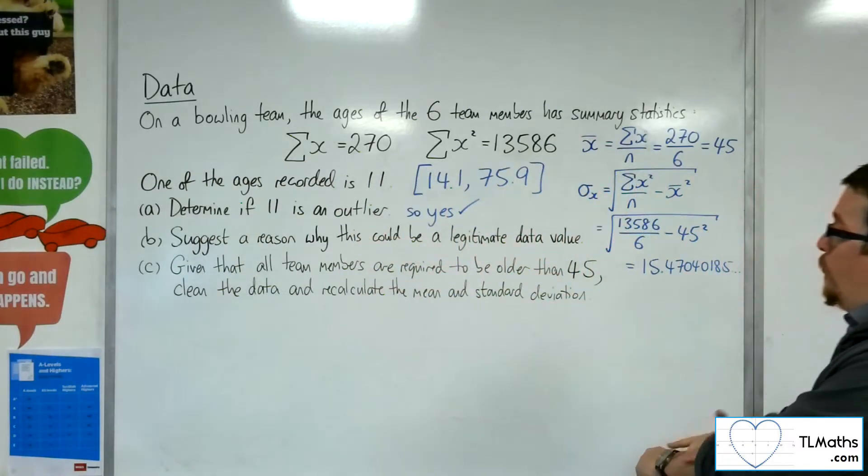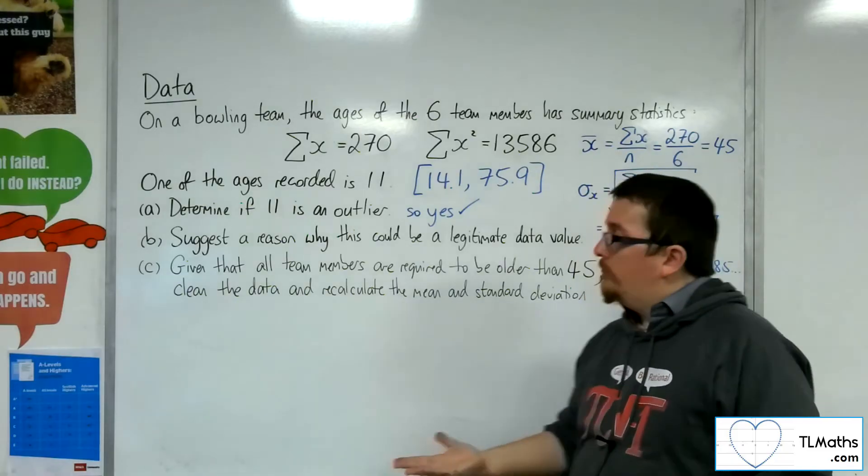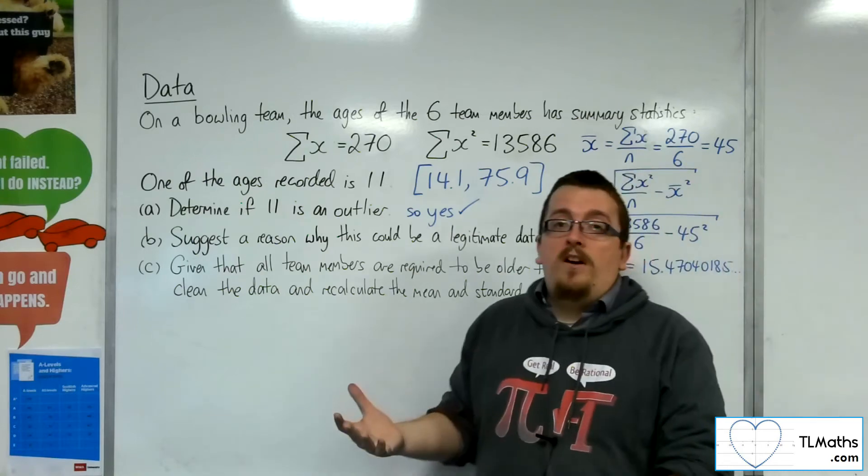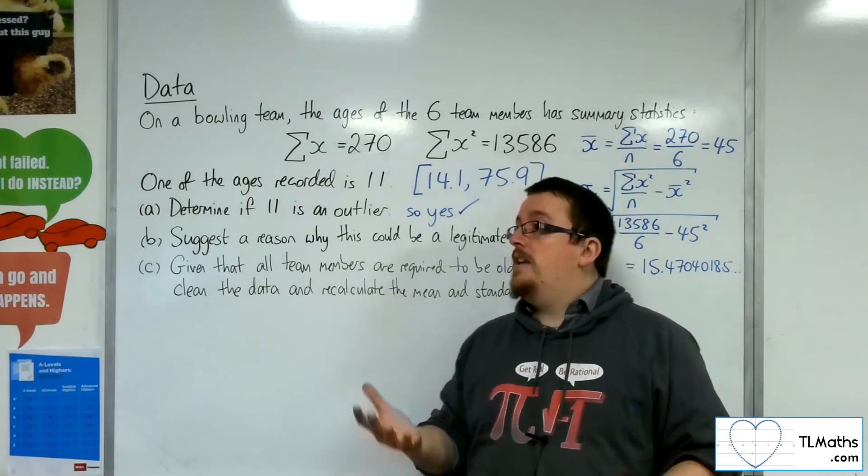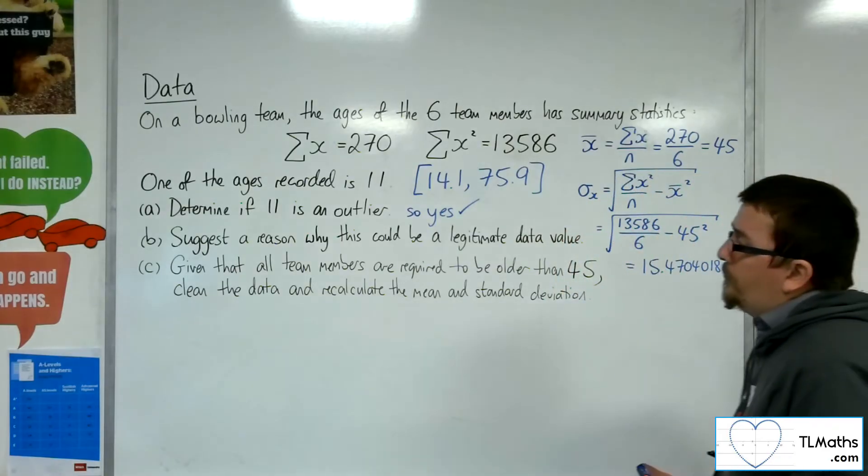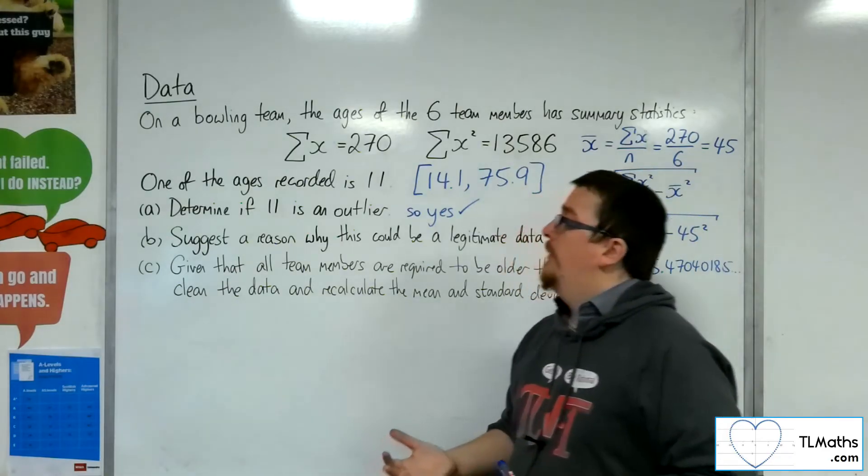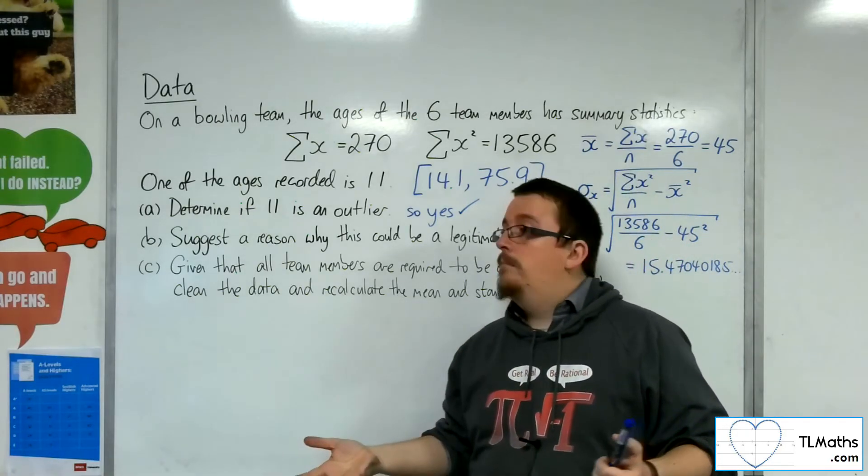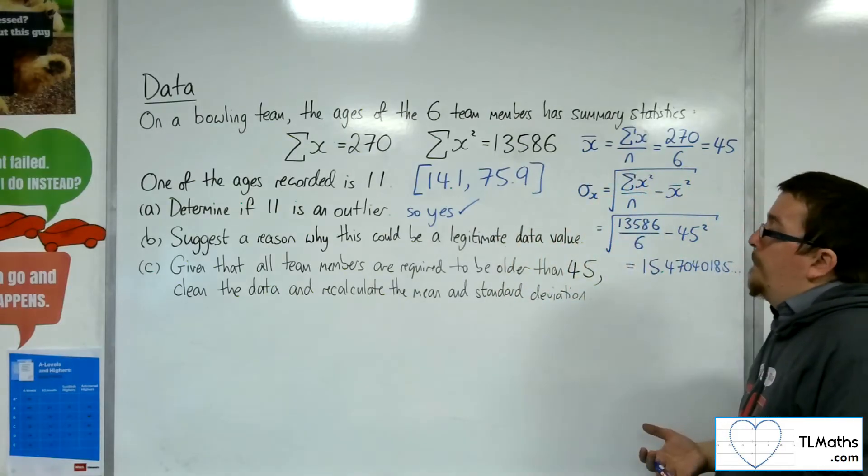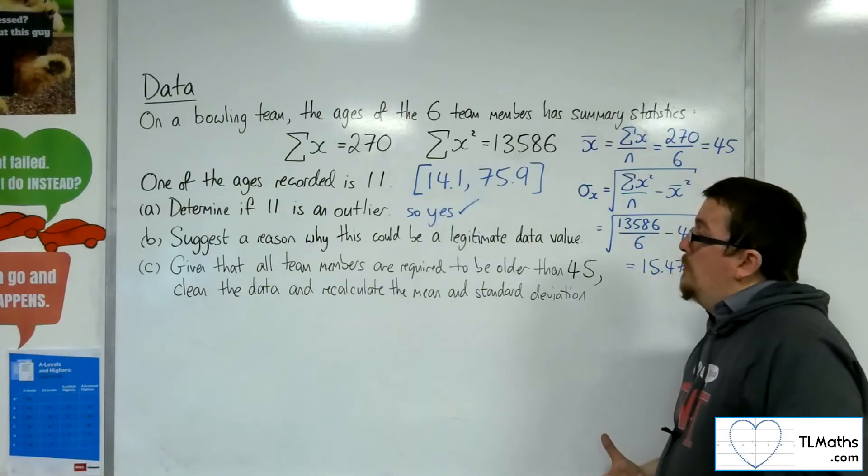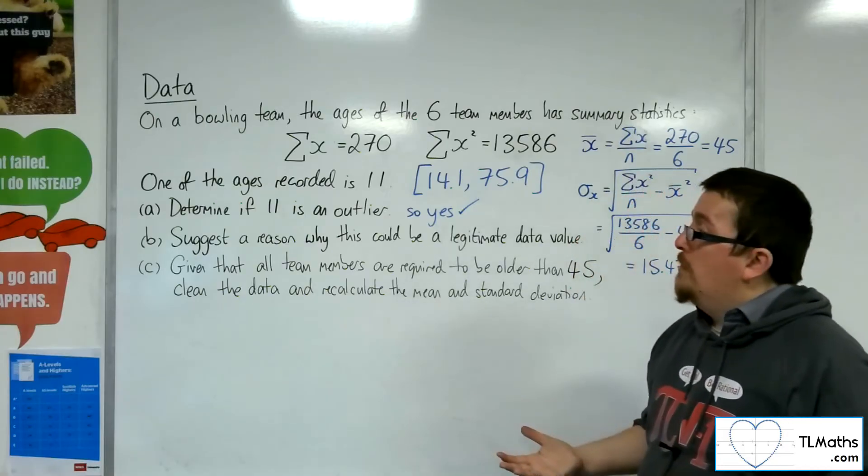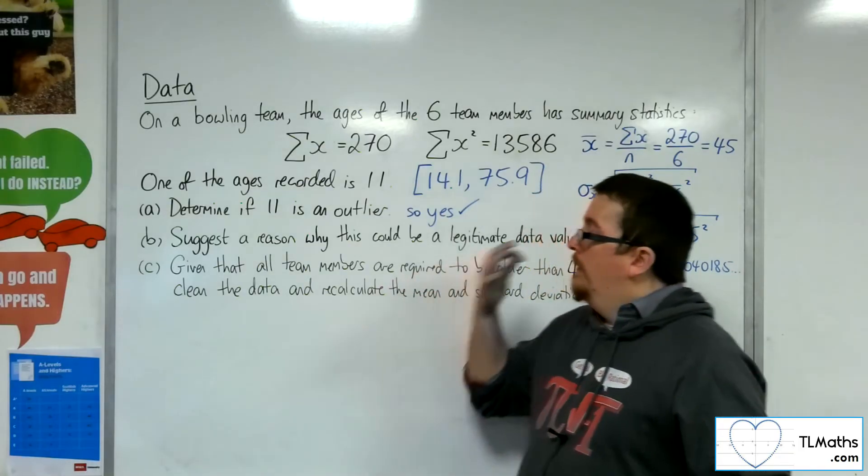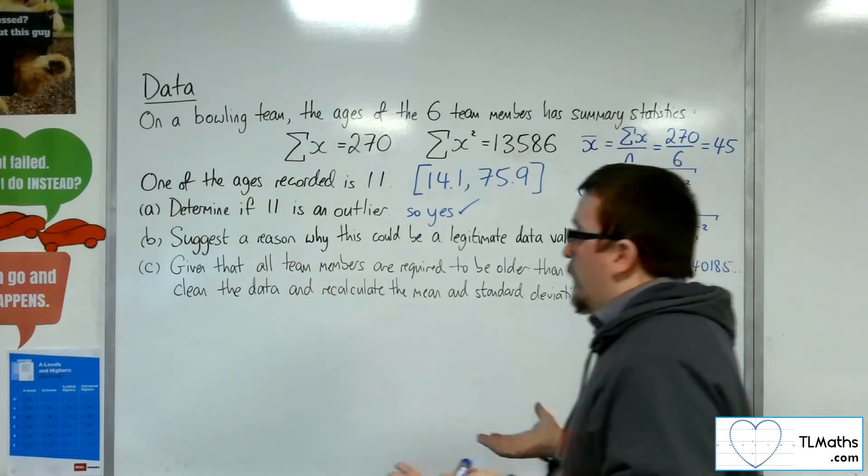Suggest a reason why this could be a legitimate data value. Well, it could well be that an 11-year-old on the bowling team, they might be incredibly good already at a young age, and they're on the team. It could also be that the 11-year-old is son or daughter of one of the other team members, and is learning the game as they go. So it's perfectly reasonable for an 11-year-old to be on a bowling team.